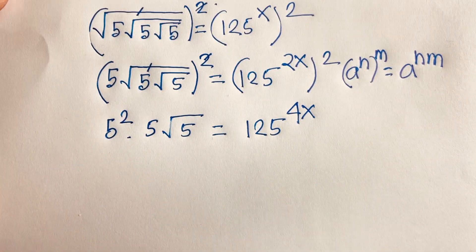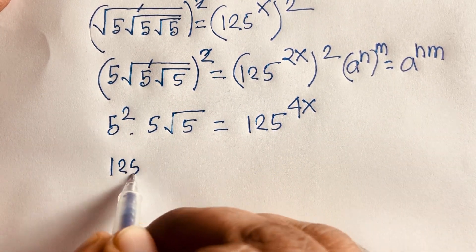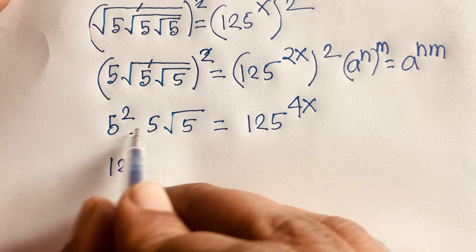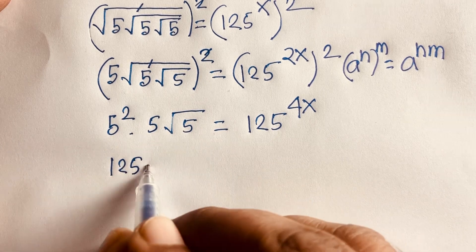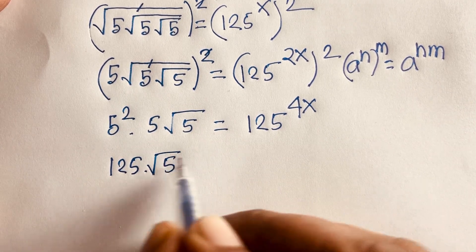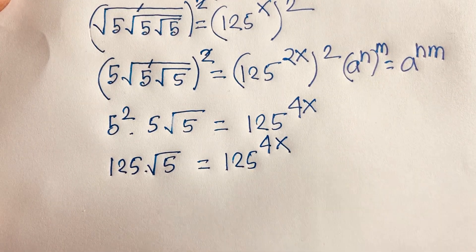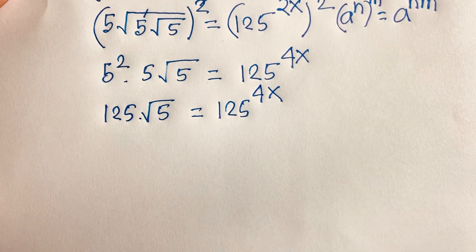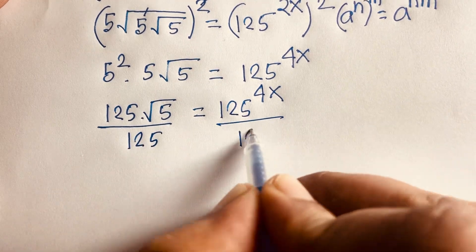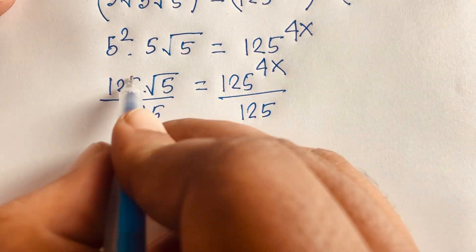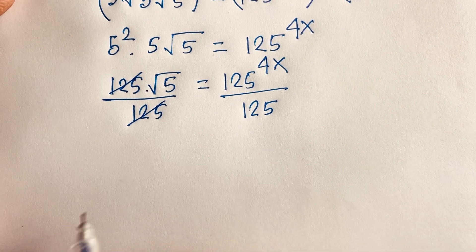I apply this formula: 5 squared is 25, and 25 times 5 is 125. So here is 125 times square root of 5 is equal to 125 to the power 4x. Then I divide both sides by 125, and 125 cancels. We find out square root of 5 is equal to 125 to the power 4x minus 1.